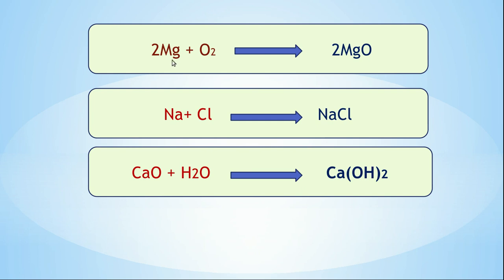In the first example, the reactants are magnesium and oxygen; in the second, sodium and chlorine; and in the third, CaO and H₂O. When these reactants react, how many products are produced? Yes — only one product in each reaction. So the common factor is: two reactants chemically combine to produce a single product. What do we call such chemical reactions?